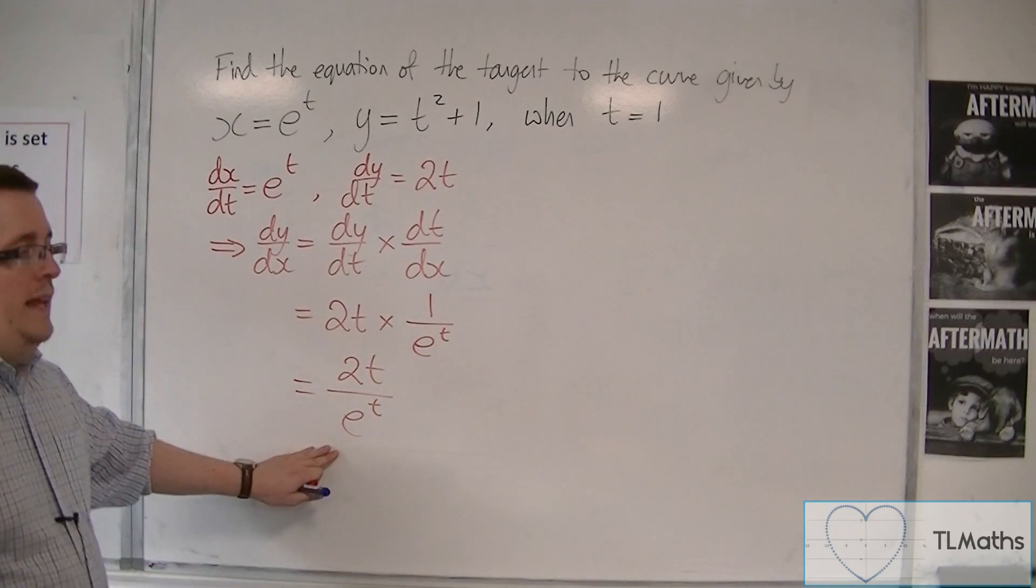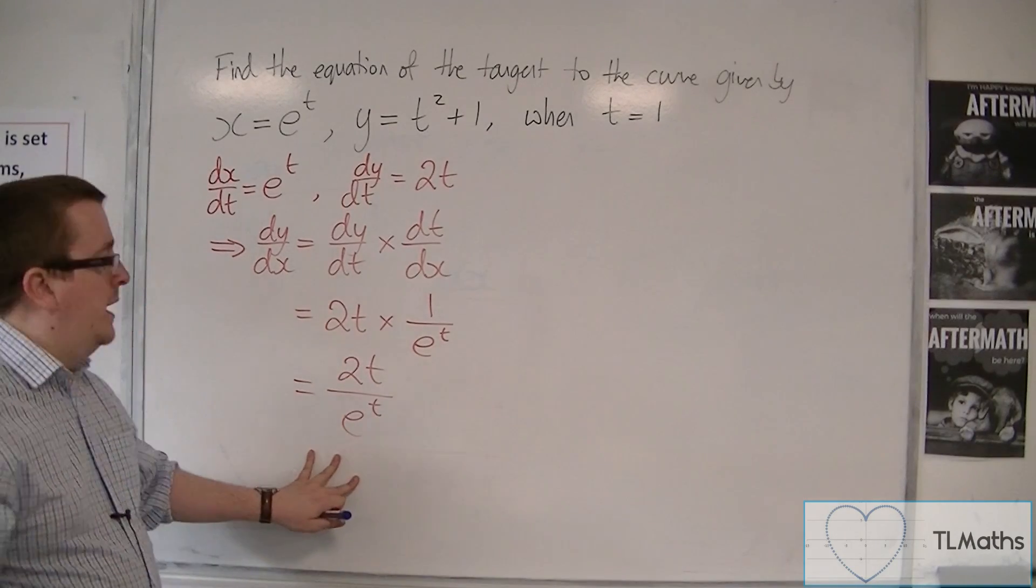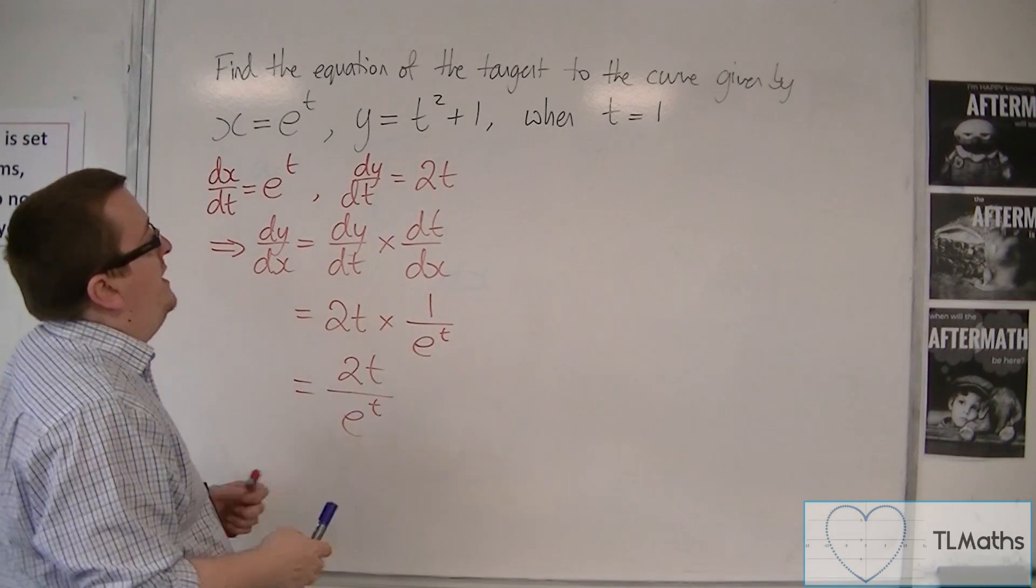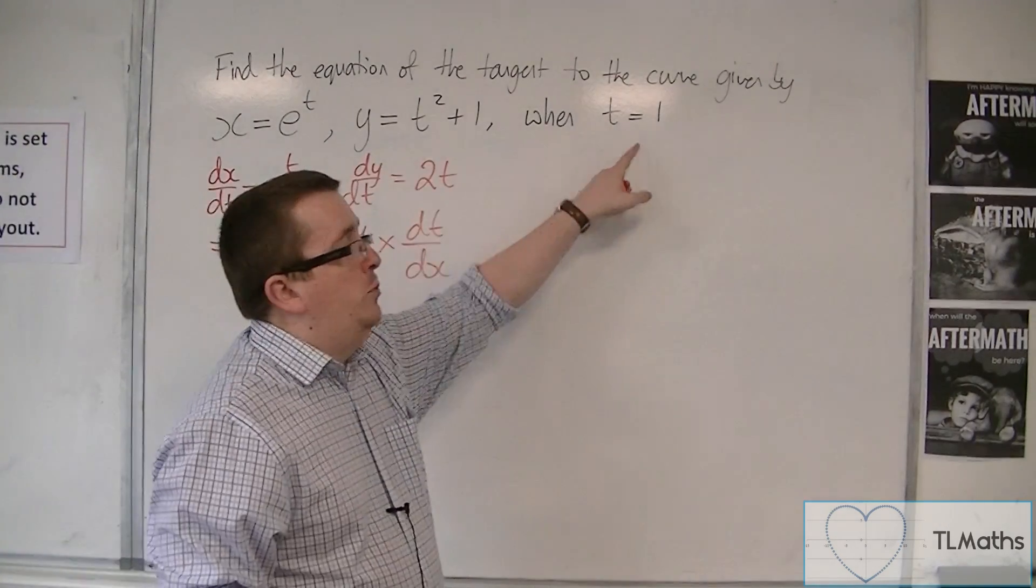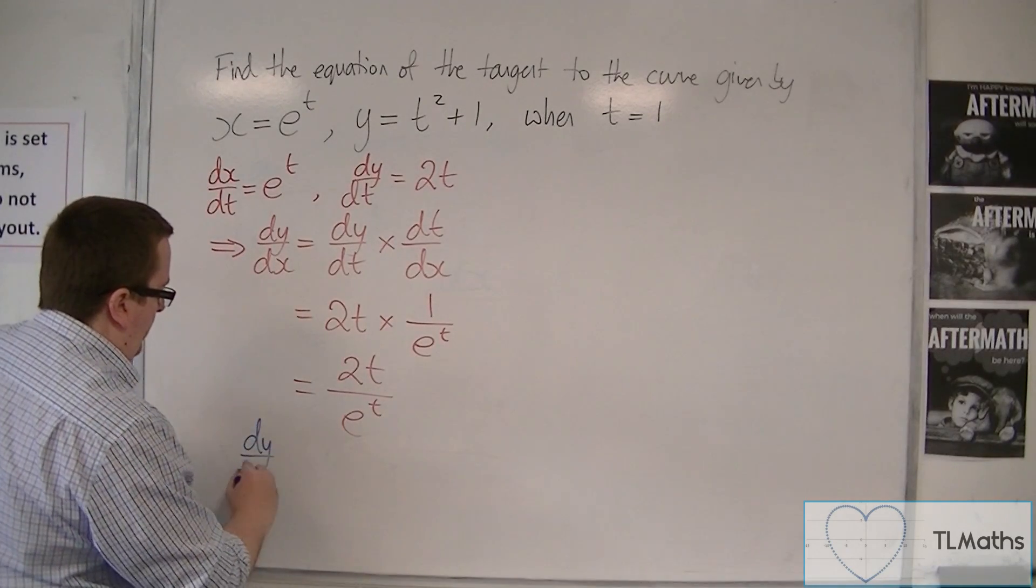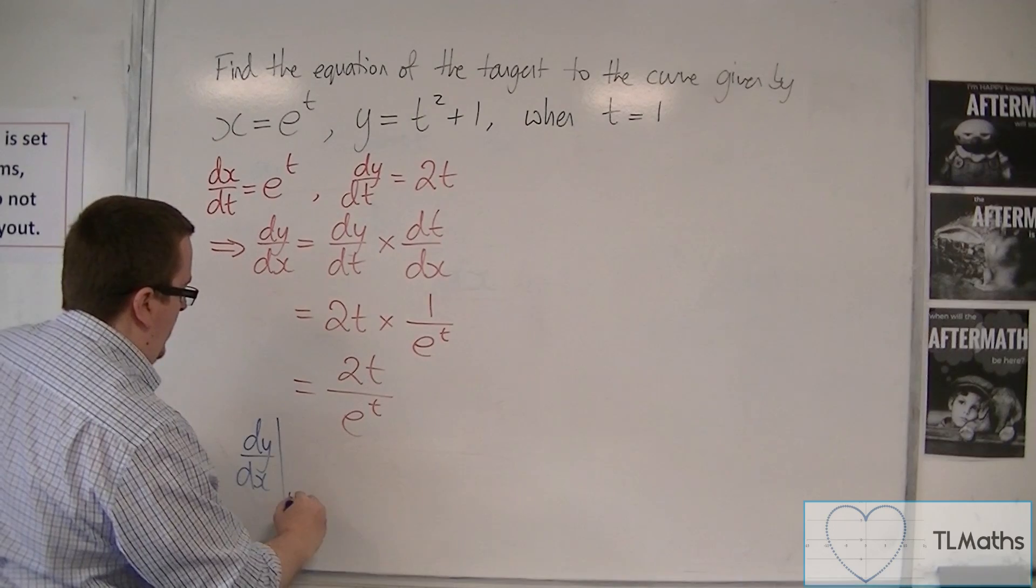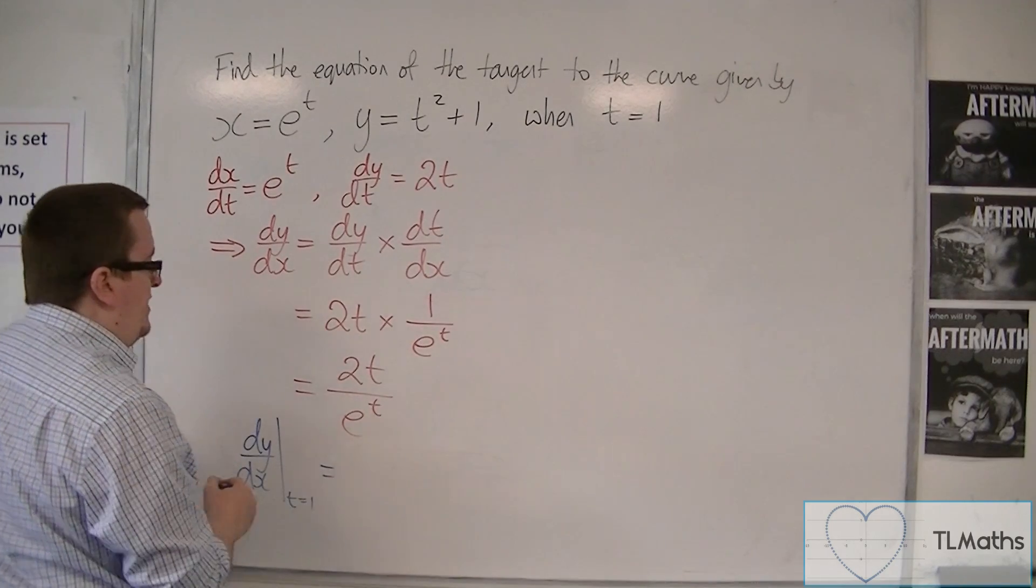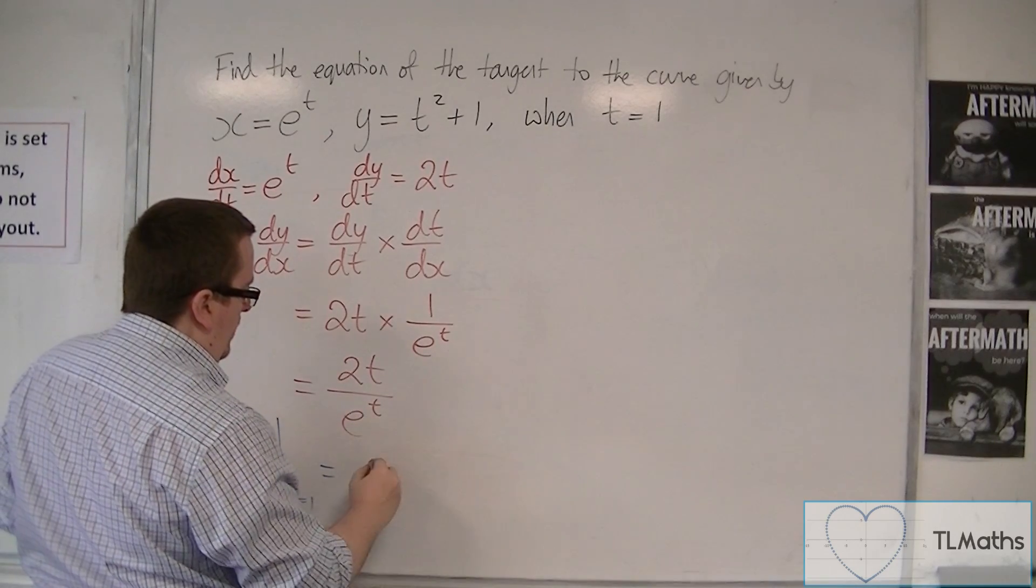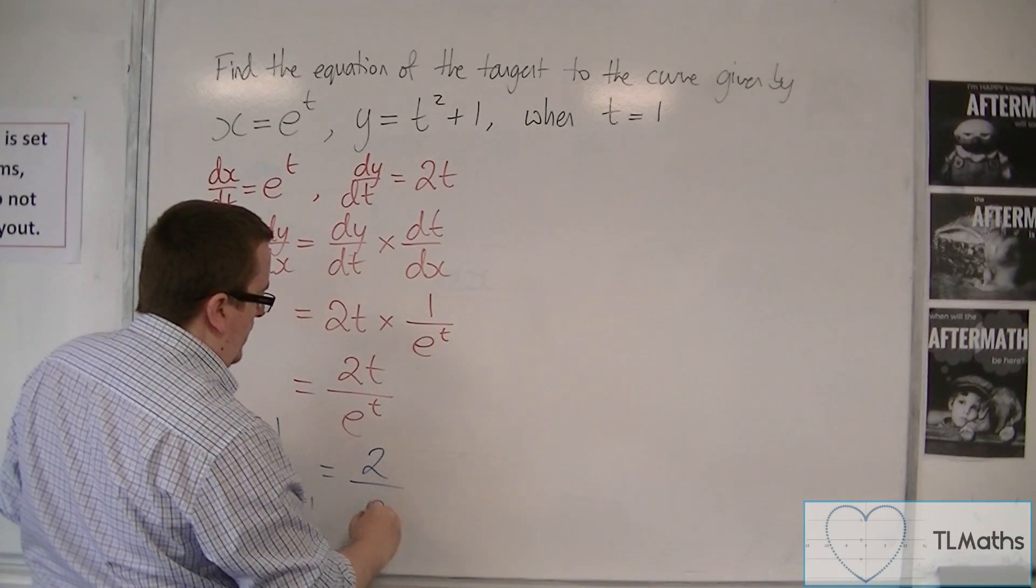This is the gradient function, the dy by dx. So then, I need to evaluate that when t is equal to 1. So dy by dx, when t equals 1, is equal to 2 lots of 1 over e to the 1. So 2 over e.